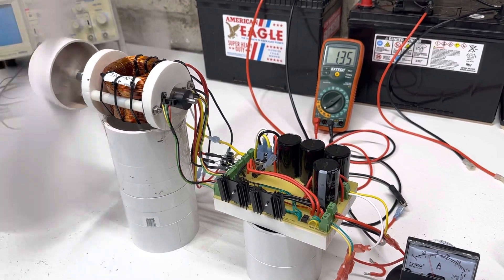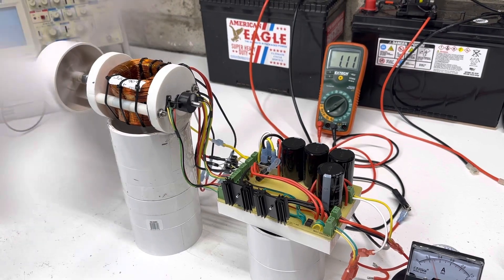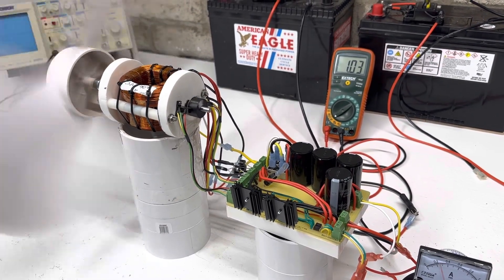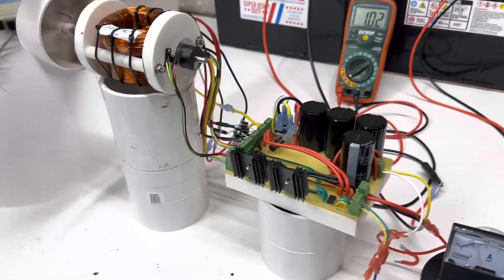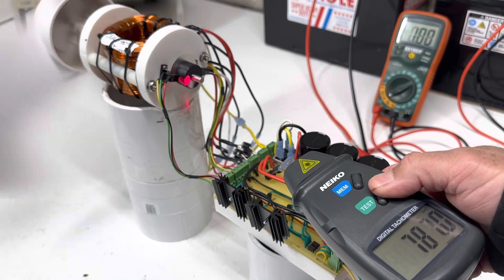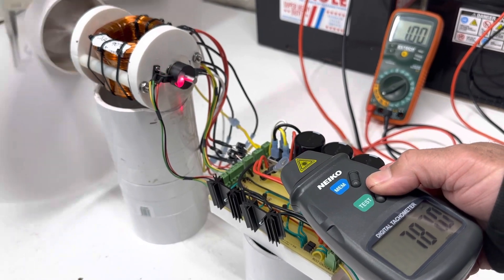So yeah, about 1 amp is pretty nice. You want just like a nice breeze in your shop in the summertime. 1 amp. Let's see what the RPM. So, 780 RPMs.